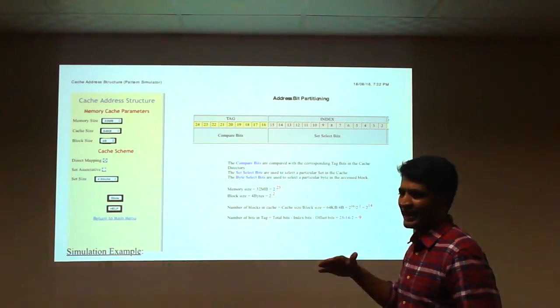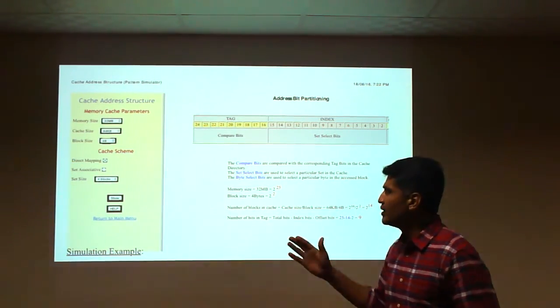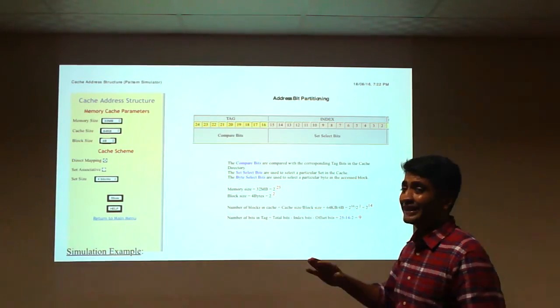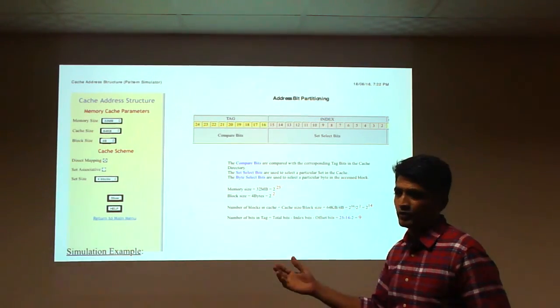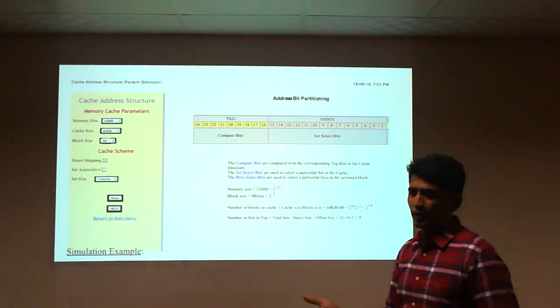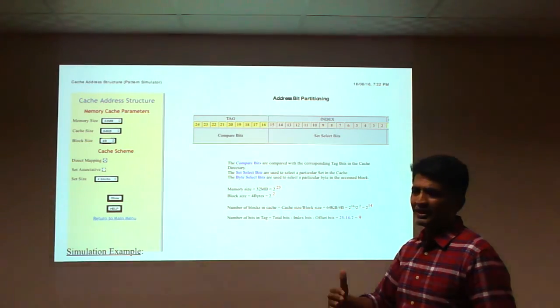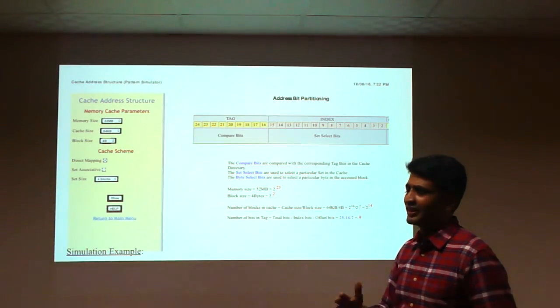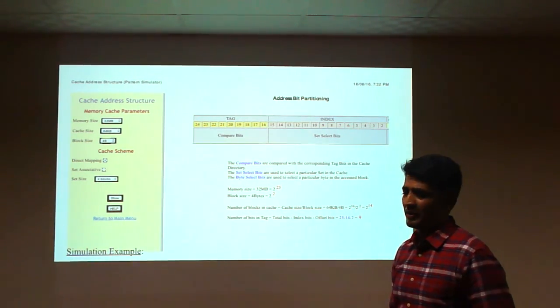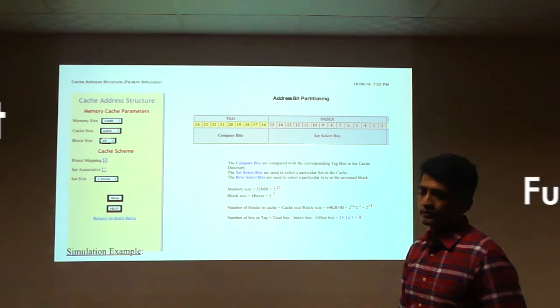This is how you calculate the main memory address for direct mapping. In the next video we'll discuss the other mapping functions: fully associative mapping and set associative mapping. Thank you.